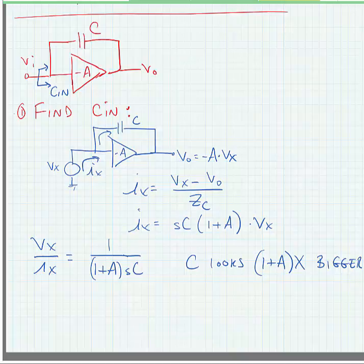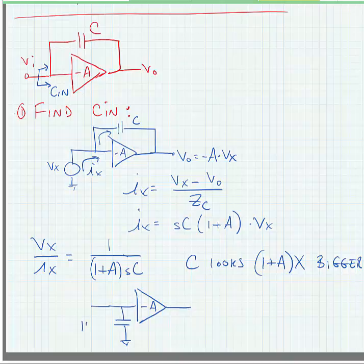So, we can make an equivalent circuit where we split the capacitor off from the output and make it 1 plus A times bigger than the original capacitance. And this will ease our analysis quite a bit.